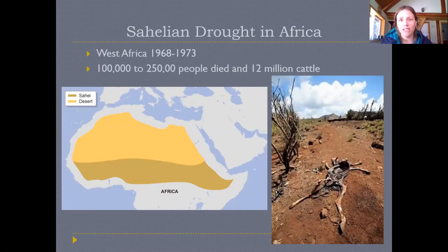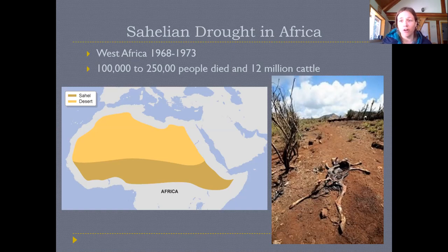An infamous more recent event occurred in the Sahel — the semi-arid area along the southern Sahara in Africa. In the late 1960s and 1970s there was an extreme dust-bowl-type event where between 100,000 and 250,000 people died during a drought that was greatly exaggerated in its impact by poor human management and overgrazing. Not only people but an estimated 12 million cattle also died during this event, illustrating how humans are deeply impacted when ecosystems don't function as expected.